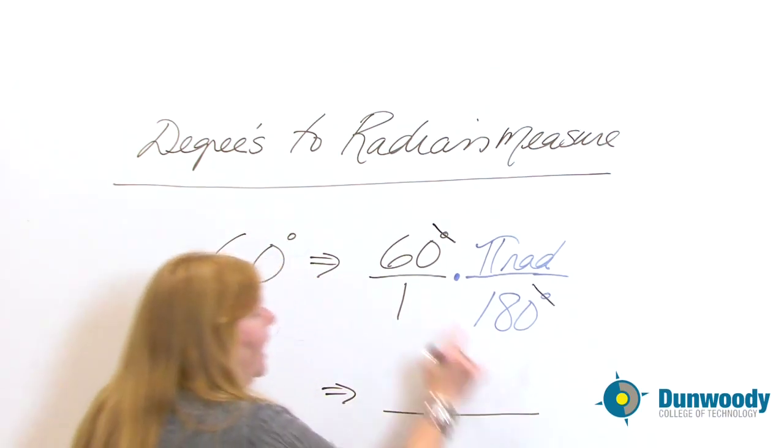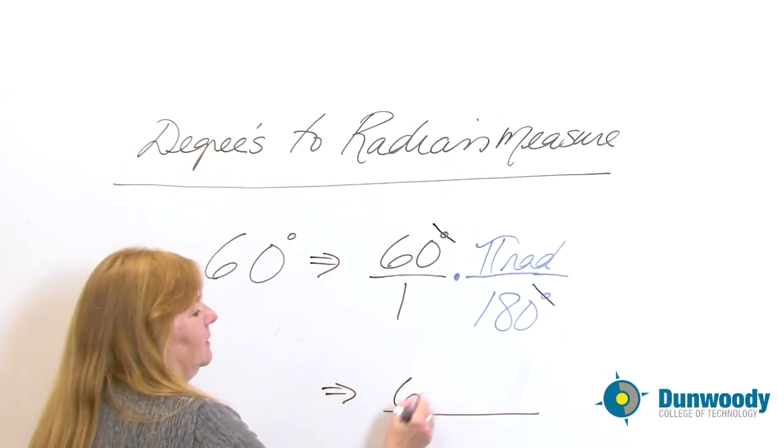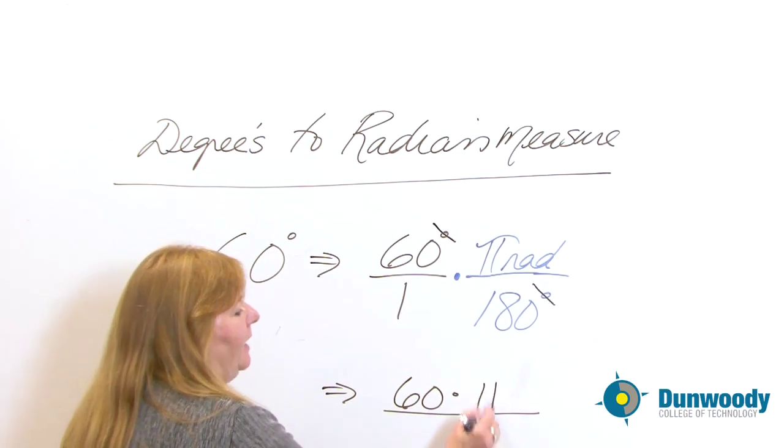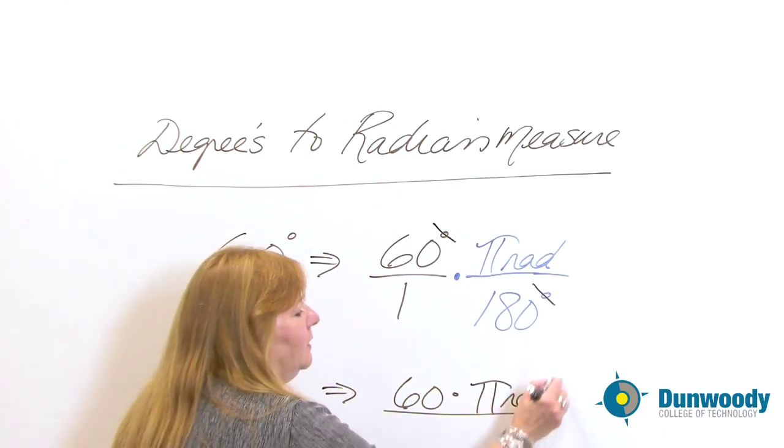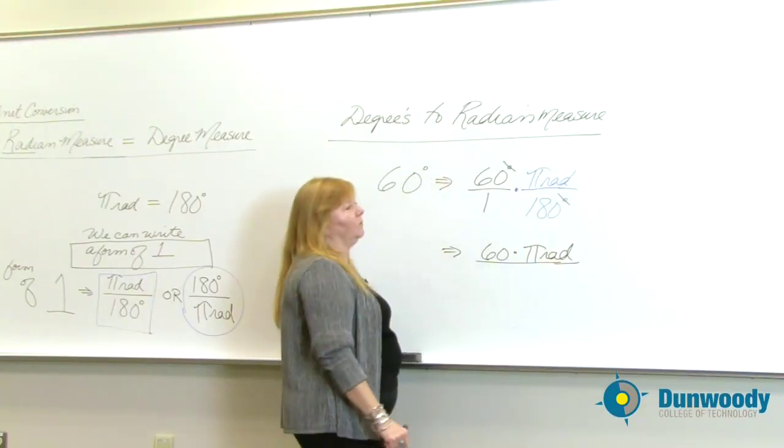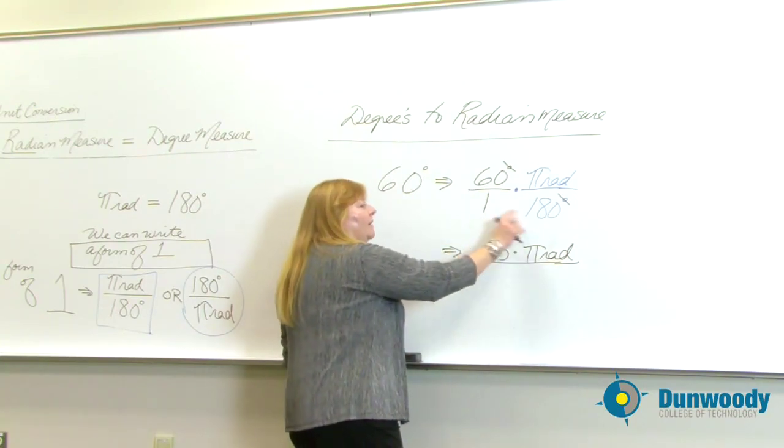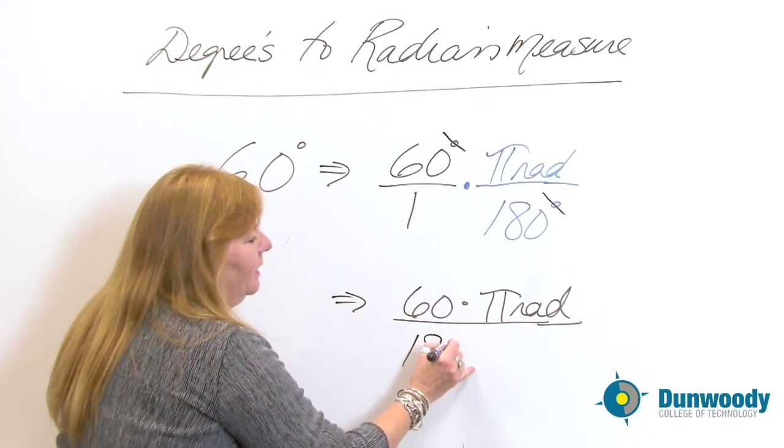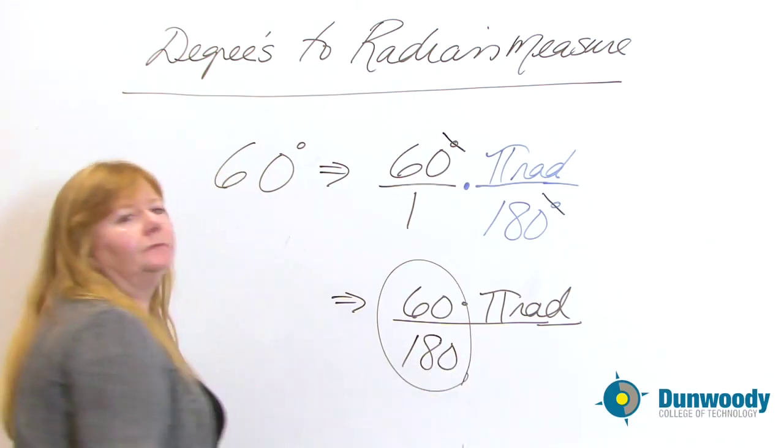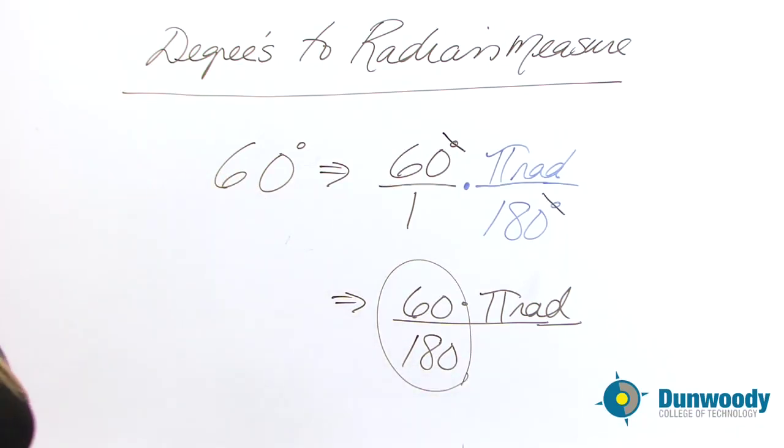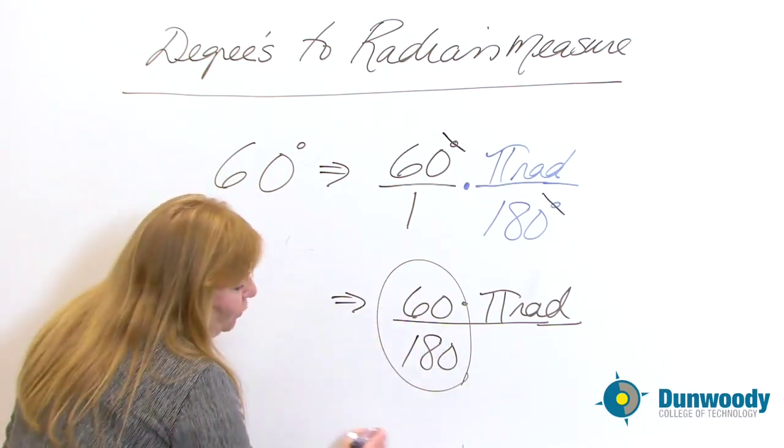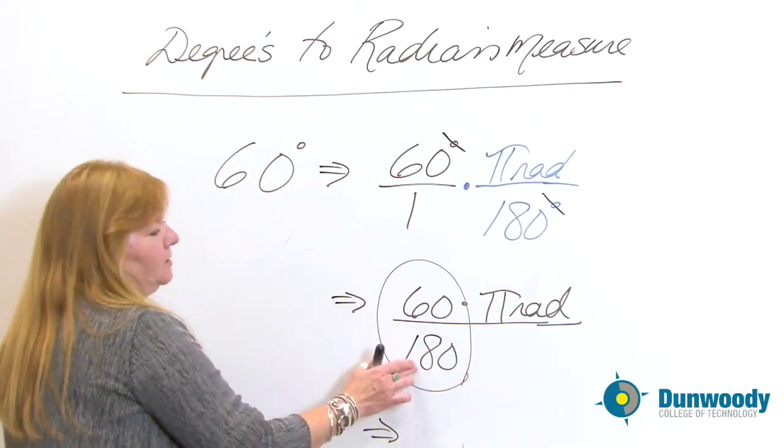And what are you left with? In the numerator, I have 60 times π times radian. Oh, we like that. That was the idea, wasn't it? And down below here, I have 1 times 180. Clean this up. Do the math. And so what do you find with this? And so when you work out your math and you start to simplify, and I'm not sure if you've ever learned how to reduce...